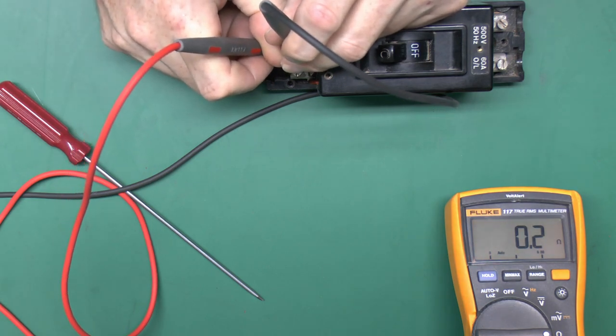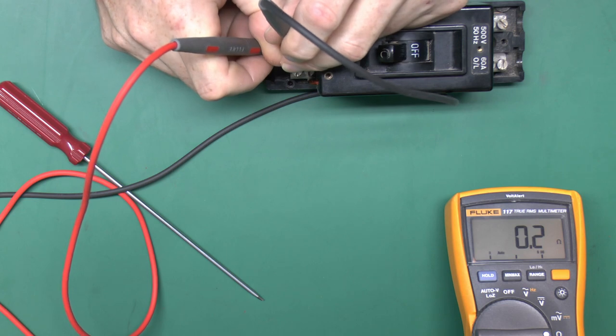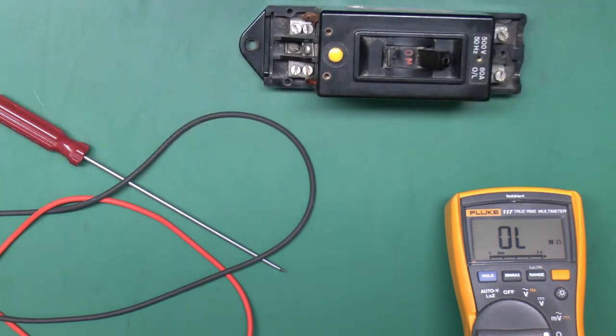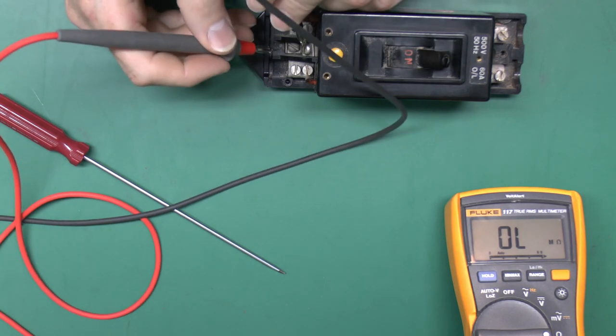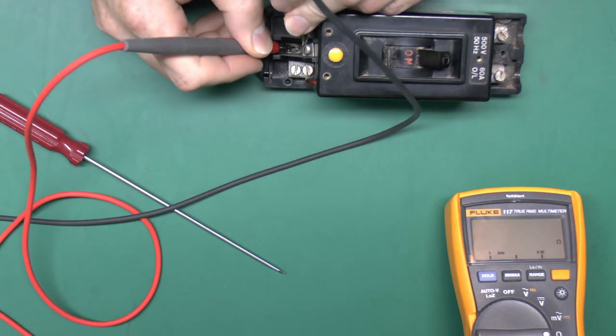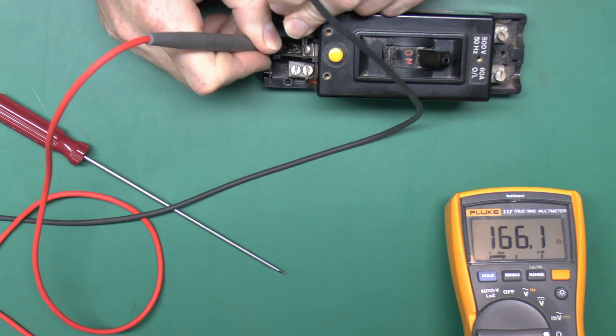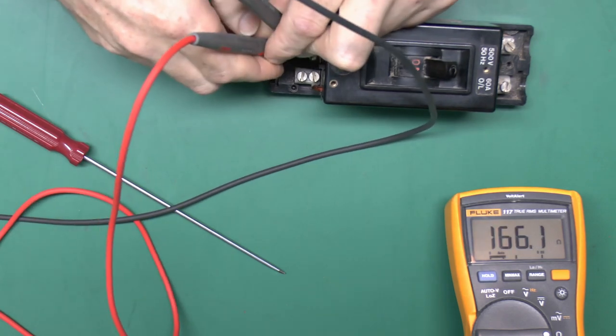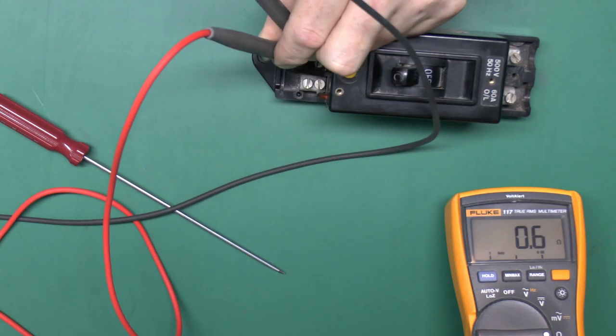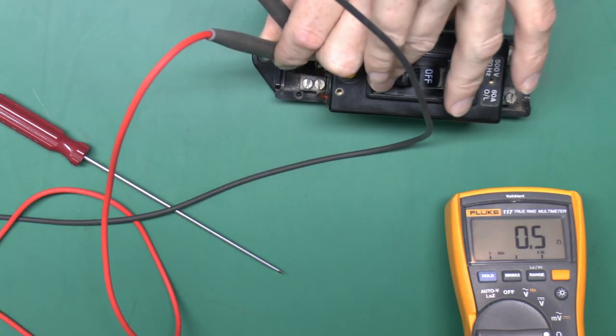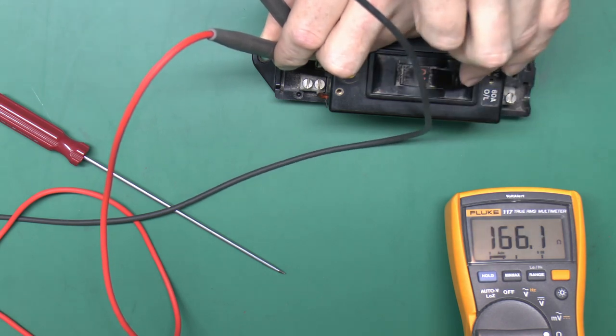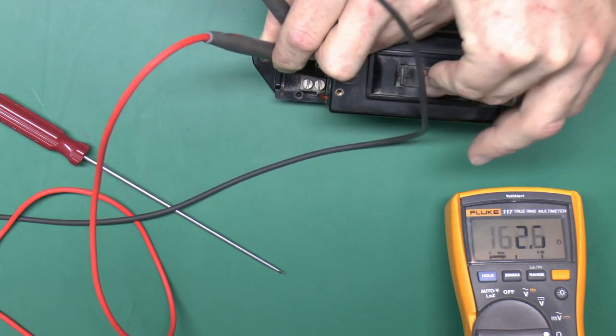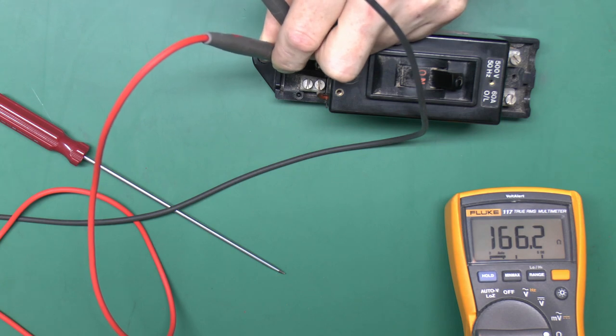Right, now that's coming out as a dead short, which certainly isn't what we would want. With 0.2 ohms that's probably just the resistance of the test leads. Let's see if it's any better when it's turned on. Right, well there we go, 166 ohms, which certainly seems as if we're more likely to be measuring across the coil there. So it may be that when this is in the off position it's putting a link across the coil internally.